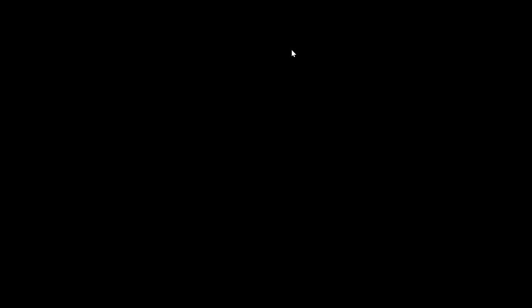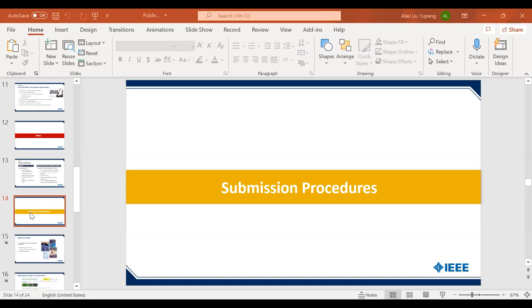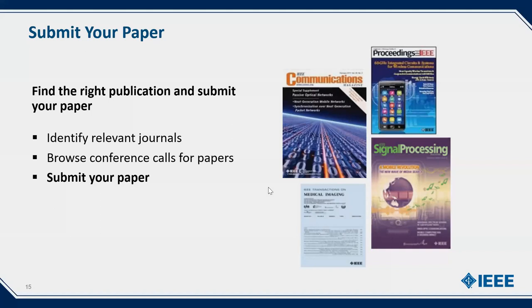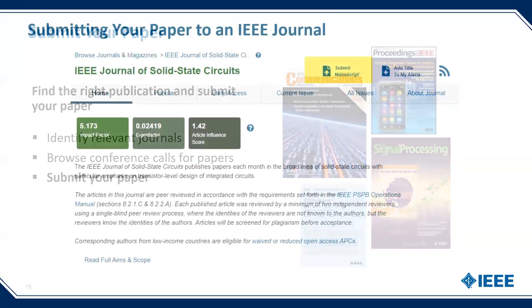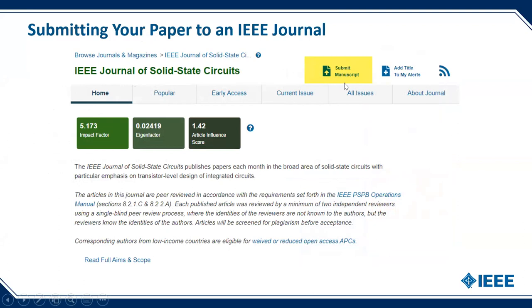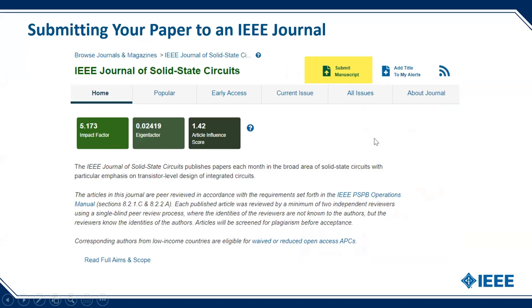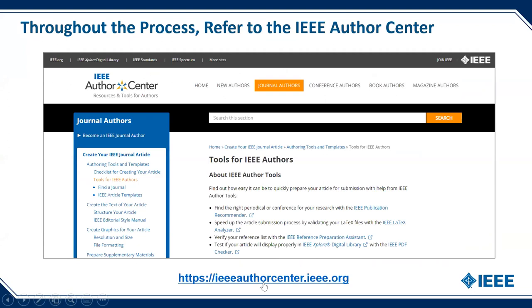Now let's talk about procedures. The submission procedure is straightforward: identify the journal or conference, then submit your paper. The key question is how to identify the right journals or conferences. Every journal page on IEEE Xplore has a 'Submit Manuscript' button — click it and it brings you to the submission page. For open access, there is a dedicated website, and I recommend visiting the IEEE Author Center for more information.